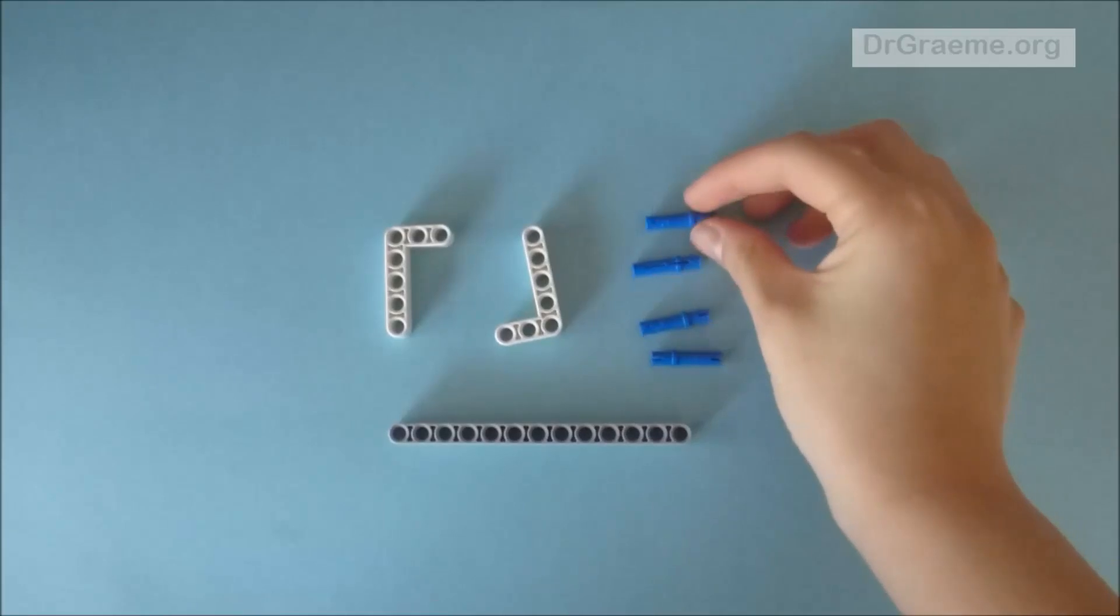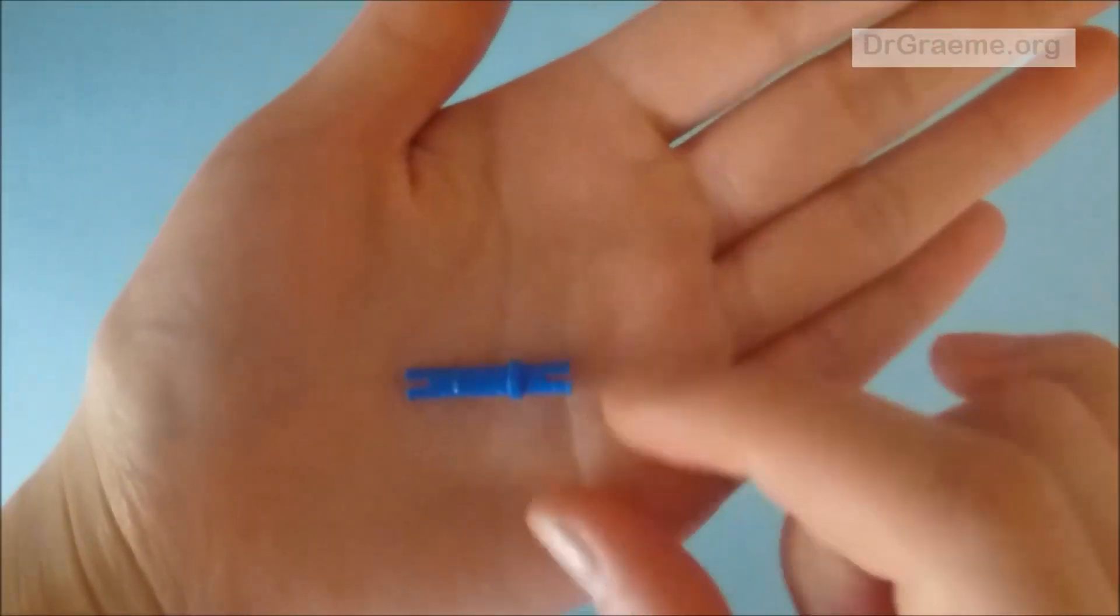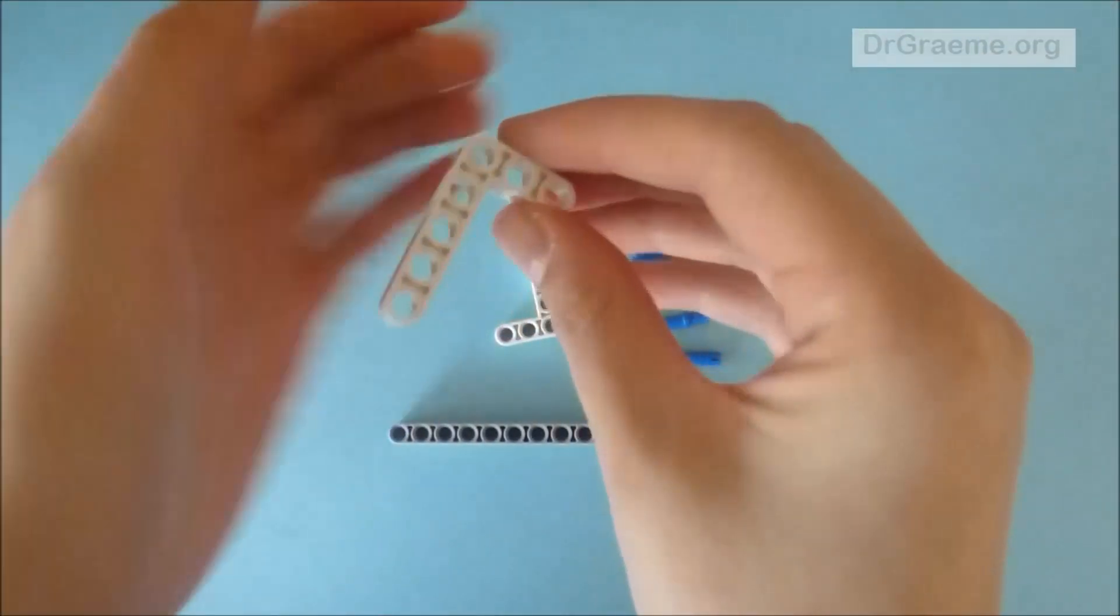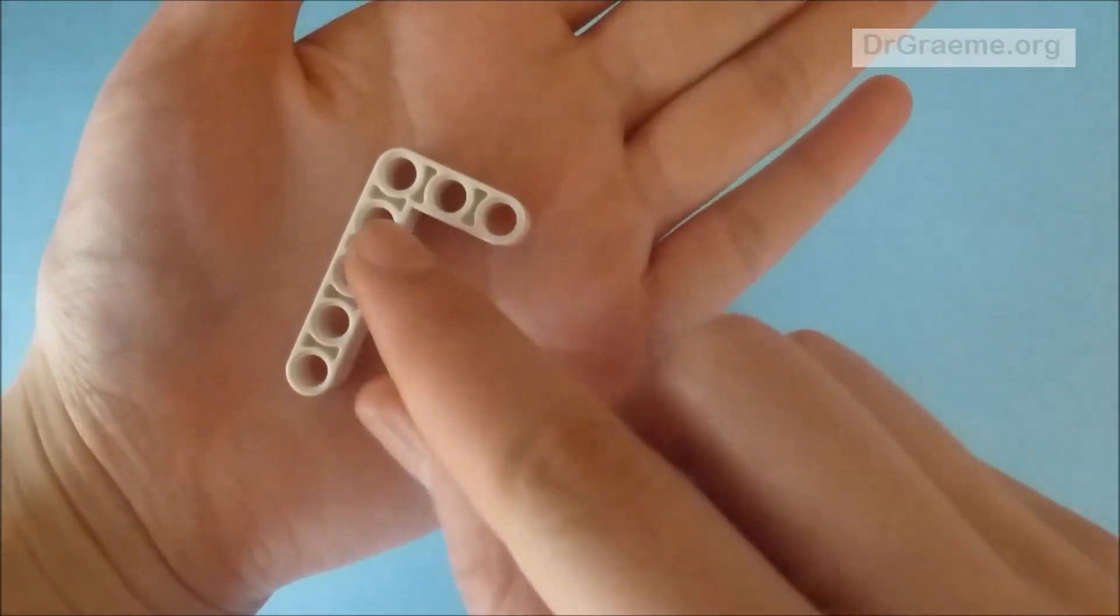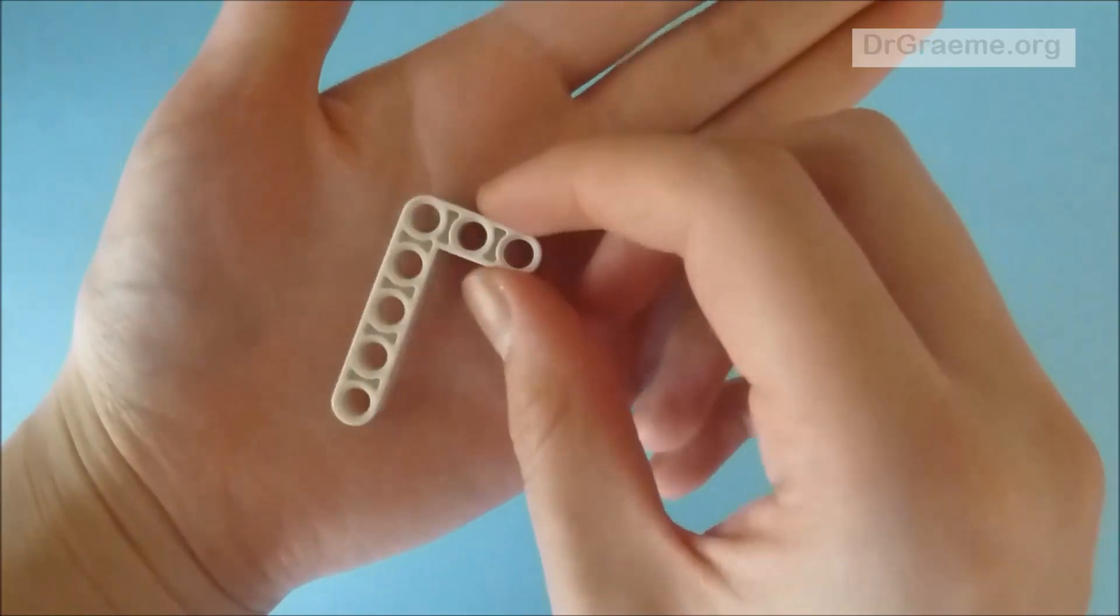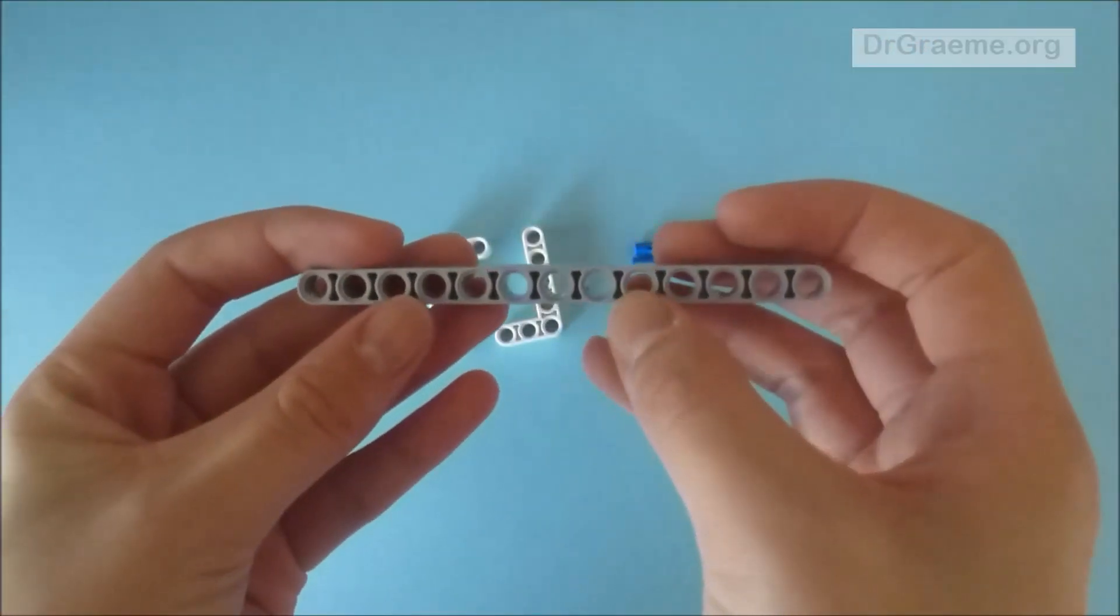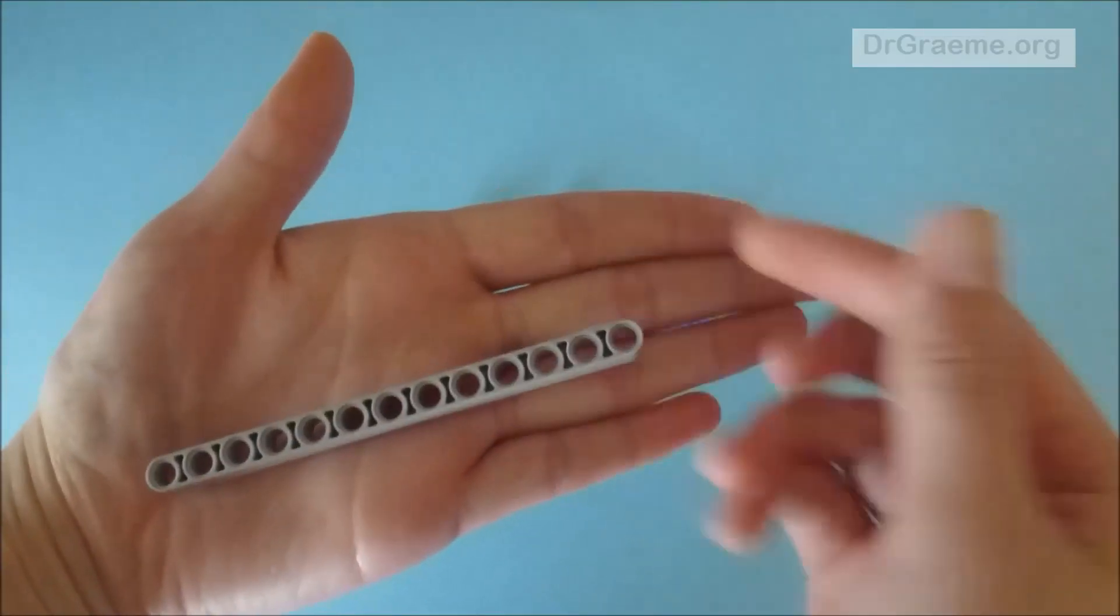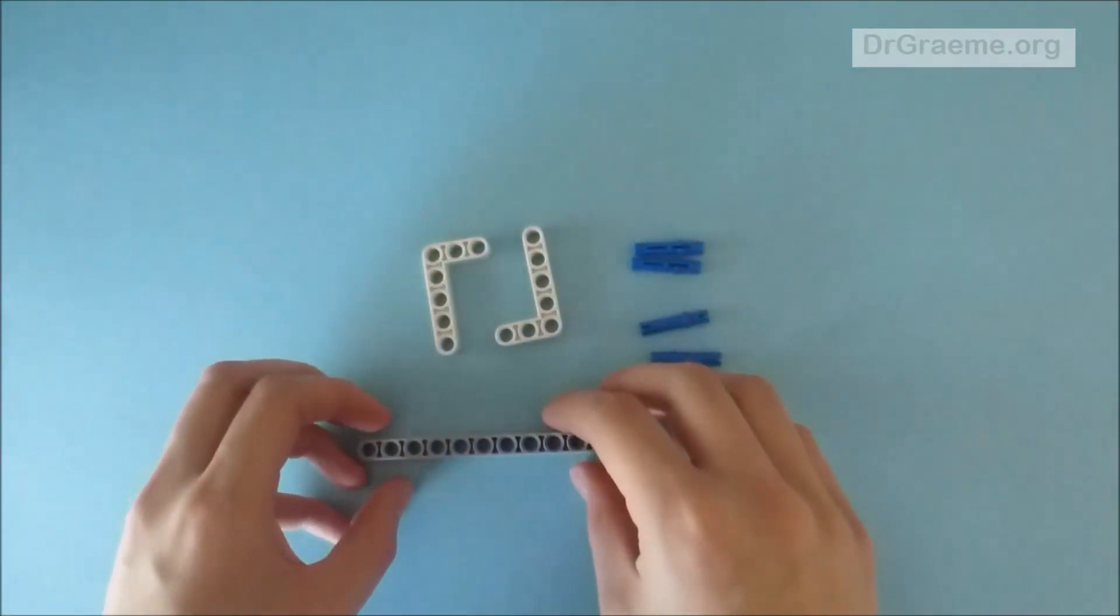For this we will need 4 long blue connector rods, 2 right angle beams - notice it is 3 by 5 holes long - and these 13 hole long beams. This should be the largest one you have in your kit.